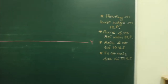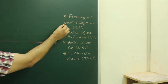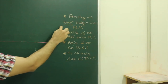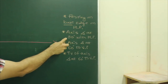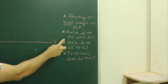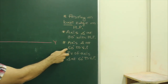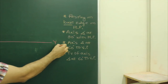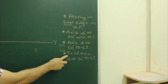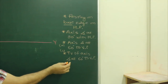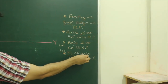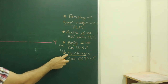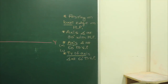As given, it is resting on its base edge — that is the first condition. Second, axis is inclined 30 degrees to the horizontal plane. Then again, axis is inclined 60 degrees to the vertical plane. This is Case A, and Case B gives the top view of the axis inclined at 60 degrees to VP. So here they are asking for the top view of the axis.